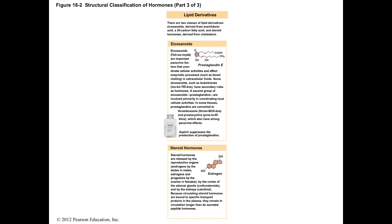Steroid hormones are the ones most people think of when they hear 'hormones' — testosterone, estrogen, progesterone, and cortisol. Chemically, when you see something with four rings, that's a steroid. Cortisol comes from the adrenal glands. Steroids are lipids, so they can cross cell membranes. If you want to remember one thing about lipid-derived hormones, just know they're steroid hormones.